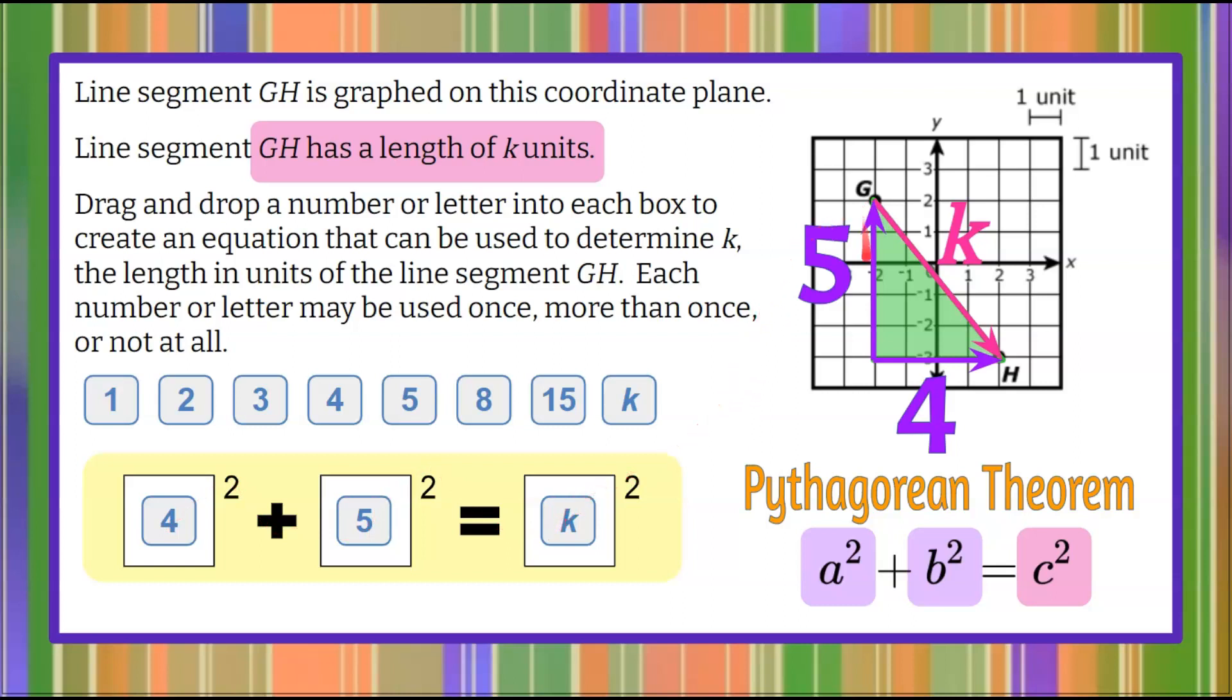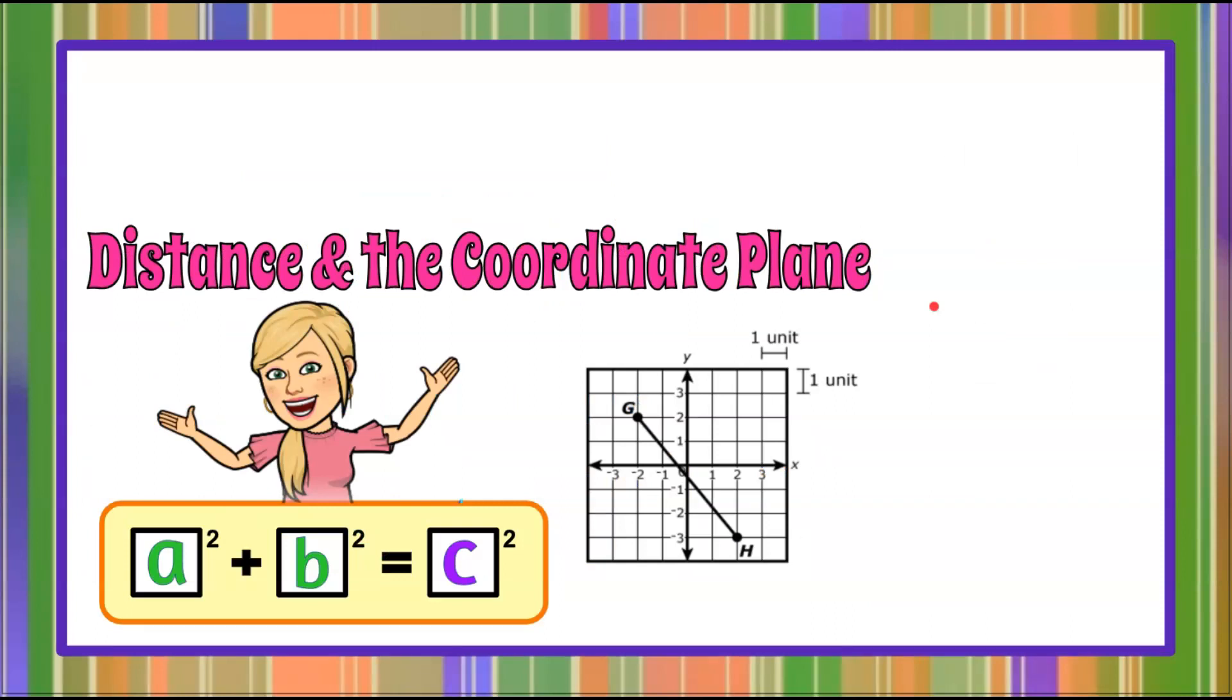Remember, the legs form the right angle. The hypotenuse is the diagonal length across from the right angle, which is also always along a side. And there you have distance and the coordinate plane.